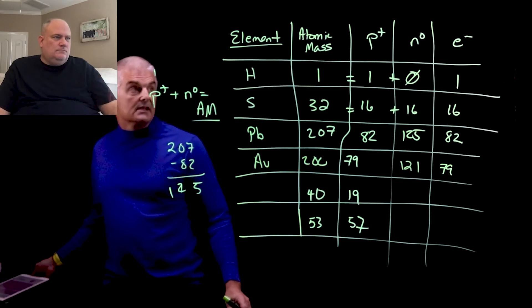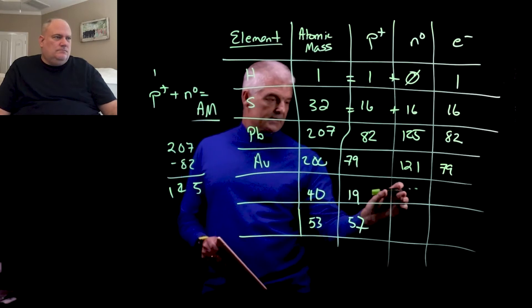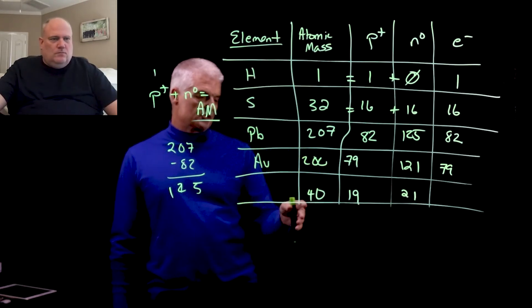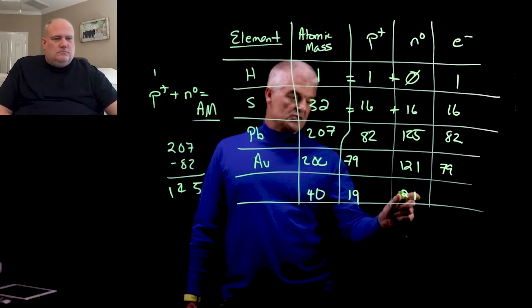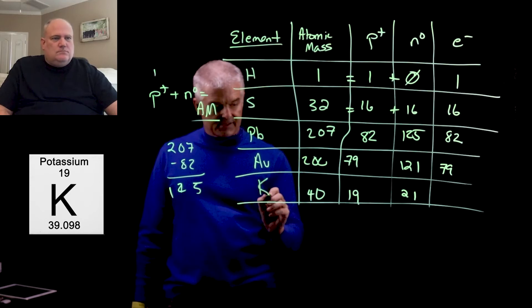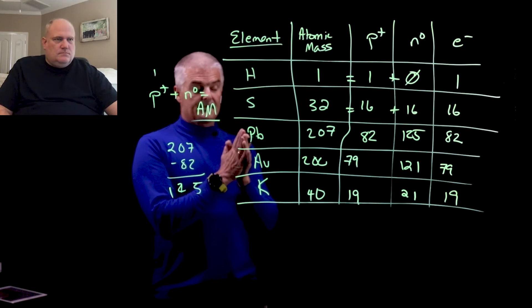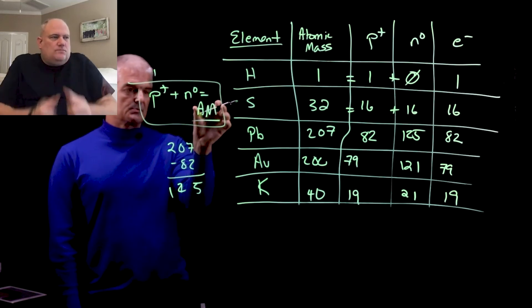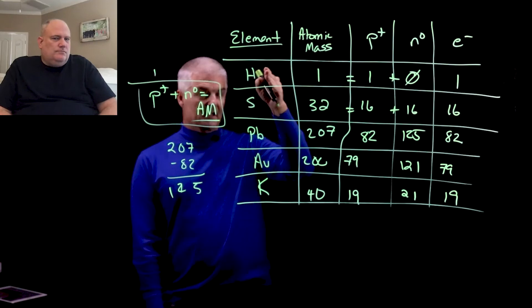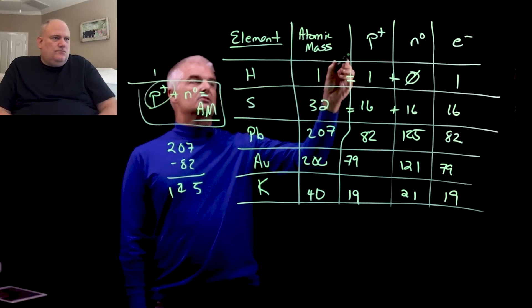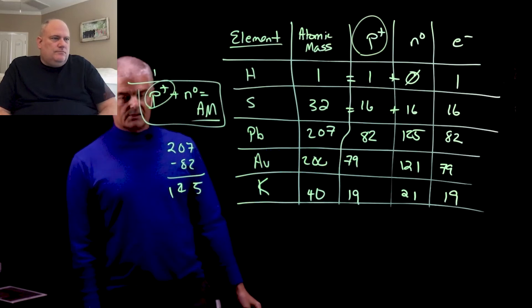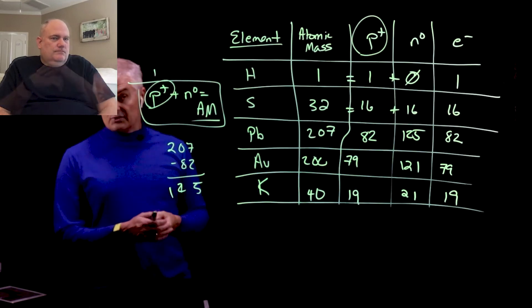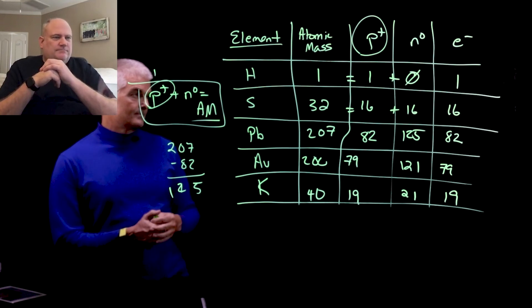For the next example, with an atomic mass of 40 and 19 protons: 40 minus 19 gives 21 neutrons. With 19 protons, the element is potassium, and electrons = 19 as well. The key things people struggle with: protons plus neutrons equals atomic mass; the element is always associated with the number of protons, which is the atomic number — the smaller number — and electrons always equal the atomic number when the atom is neutral. Use the periodic table as your friend!